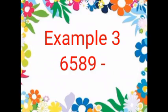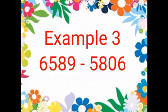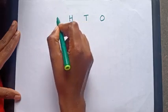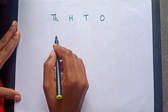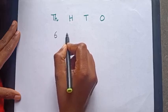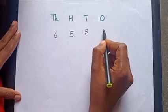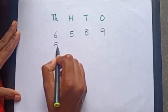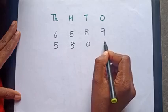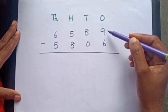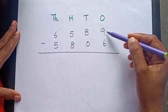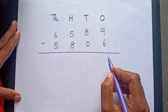Let us see the example: 6,589 minus 5,806. First we have to write the place values - ones, tens, hundreds, thousands - and write the given numbers: 6,589 and 5,806. Let's subtract. 9 minus 6 is equal to? Yes, very good, 3.